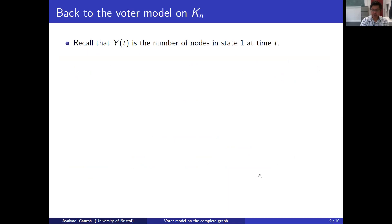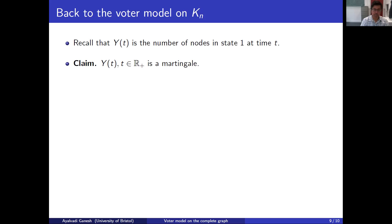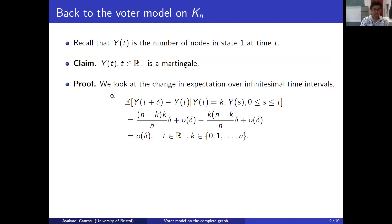So with all those preliminaries, let's get back to the voter model — that was, after all, our motivation for introducing martingales. Let me remind you of the notation: y_t was the number of nodes in state 1 at time t. Our claim is that y_t is a martingale, and we need to prove this in order to be able to use the optional stopping theorem. To prove this, we have to show that the expectation of y_{t+s} given the history up to time t equals y_t, for all positive s.